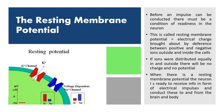Next is resting membrane potential. Before an impulse is conducted, there is a condition of readiness in the neuron called resting membrane potential. This electrical charge is brought about by differences between positive and negative ions outside and inside the cell. If ions were distributed equally, there would be no charge and no potential. When there is a resting membrane potential, the neuron is ready to receive information in the form of electrical impulses and conduct them to and from the body and brain.